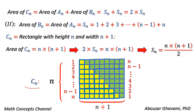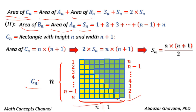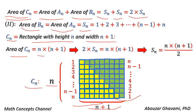Rectangle Cn is formed by merging block set An with block set Bn. Thus the area of rectangle Cn equals the area of block set An plus the area of block set Bn. The area of block set Bn equals the area of block set An, which is Sn. Thus the area of rectangle Cn equals Sn plus Sn, that is equal to 2 times Sn. Note that Cn is a rectangle with height of n units and width of n plus 1 units, thus the area of Cn equals n times n plus 1 units squared.